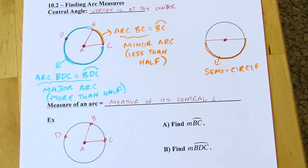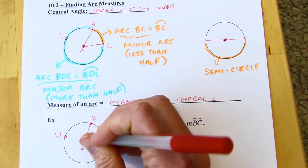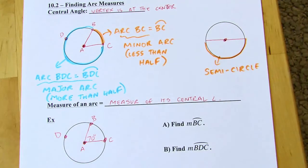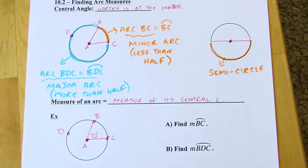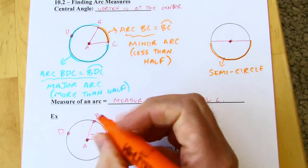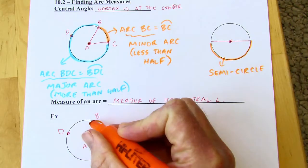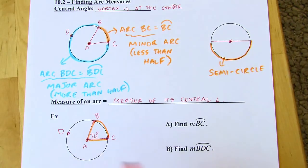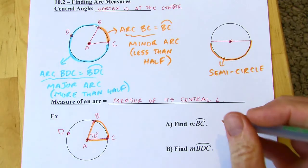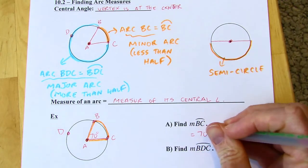So if I have the measure of this angle here, let's say that this is 70 degrees. So then the measure of the arc, well, I'm just looking, here's arc BC. And then that's the angle that cuts it out. So the measure of arc BC is just 70 degrees. It's just as simple as that.